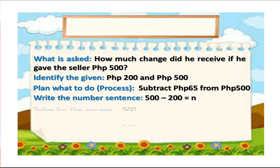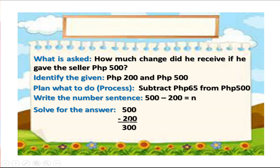Solve for the answer. 500 minus 200: 0 minus 0 is equal to 0, 0 minus 0 is equal to 0, 5 minus 2 is equal to 3. So, the answer is the change is 300 pesos. That's all for today. Goodbye. Thank you for watching. Bye.